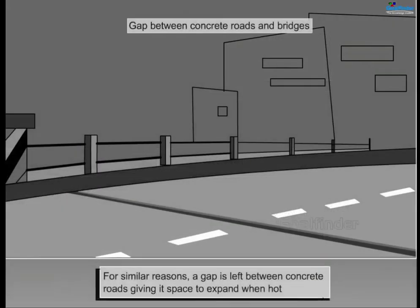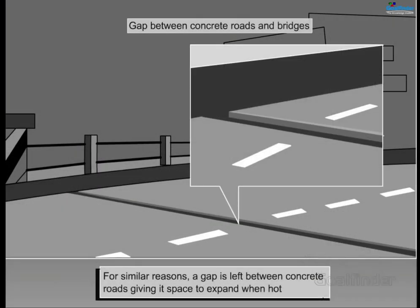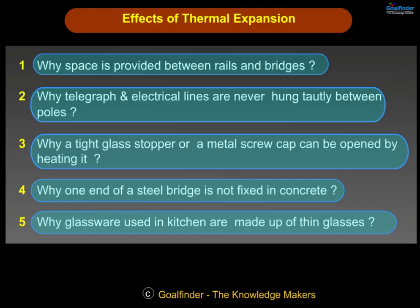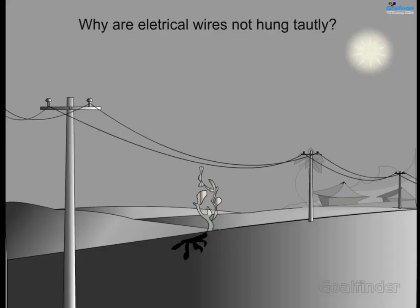Gap between concrete roads and bridges: for similar reasons, a gap is left between concrete road sections, giving them space to expand when hot. Why are telegraph and electrical lines never hung tautly between poles?